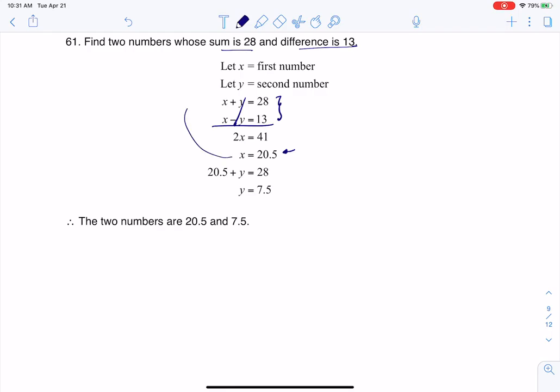you can plug that back into either of these first two equations. It doesn't matter what you pick, I wound up opting for this first one, so that's where you see me putting that 20.5 plus y equals 28, and then I solve for my y value, and those are my two numbers. Alright, thanks so much, bye!